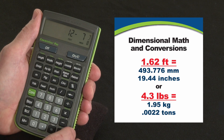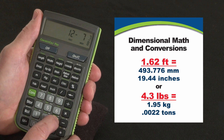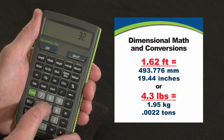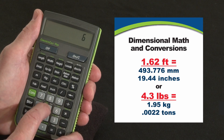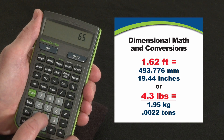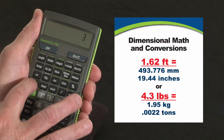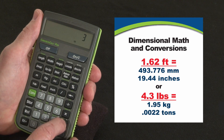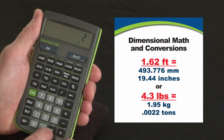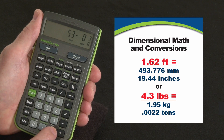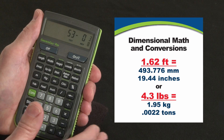Now you're not locked into that format — you can combine and mix formats. Say plus 32.5 feet, plus 65.25 inches, plus 3 yards, and minus 2 meters — you can mix stuff all up. Hit equals, it comes back in the format we started with, which is feet, inch, fraction.